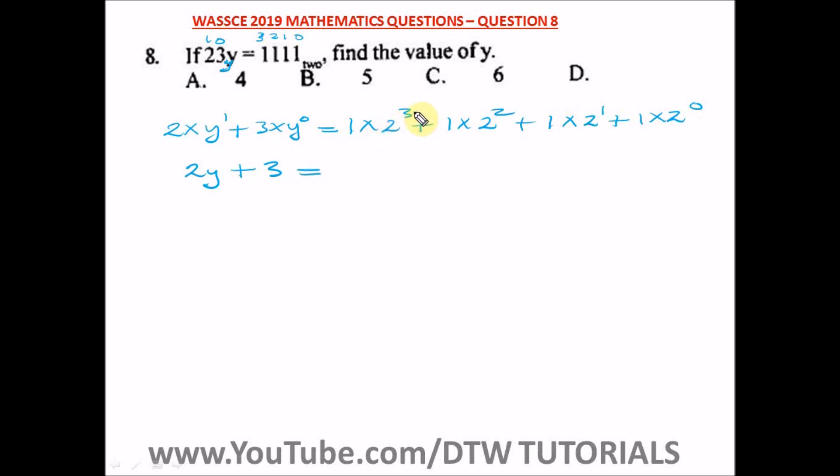Equal to, we have 2 raised to the power 3. What is 2 raised to the power 3? That is 2 times 2 times 2, which will give us 8. 8 times 1 is still 8. Plus 2 raised to the power 2 is 4, 4 times 1 will give us 4. Plus 2 raised to the power 1 is 2, and 2 times 1 will give us 2. Plus 2 raised to the power 0 is 1, and 1 times 1 will give us 1.